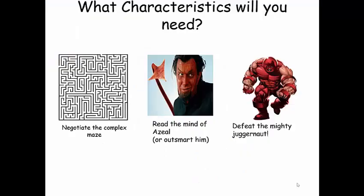So first of all, there is a very complicated maze — you're going to need to be smart. You need to read the mind of Aziel or outsmart him, so being a telepath might help here. And you need to defeat the mighty Juggernaut, so strength or some other way of defeating him is going to be important. I've uploaded to Fronter some cards with different X-Men that you can pick from and their characteristics. If you know the X-Men already, you don't even need to look at the cards. Those are there to help you pick out the two mutants that you think you're going to want to breed together to defeat this puzzle.